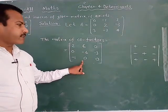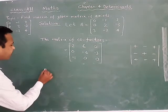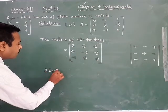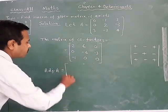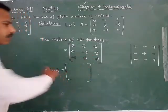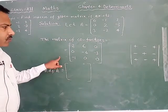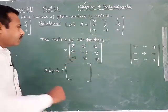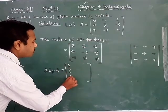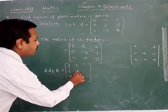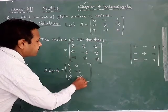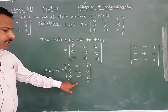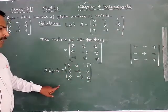It is the matrix of cofactors. Now the adjoint matrix — the adjoint of A is equal to the transpose of this matrix. Students, you have to take the transpose. The matrix of cofactors is: 2, 6, 0 / 0, minus 6, minus 3 / minus 1, 0, 0 and the transpose of this matrix gives the adjoint.